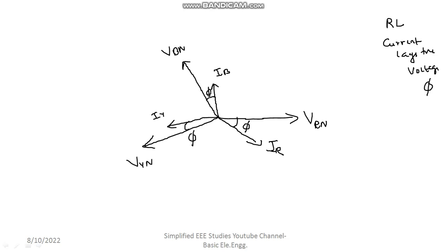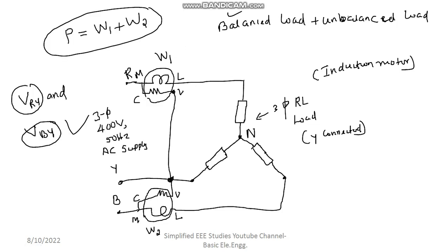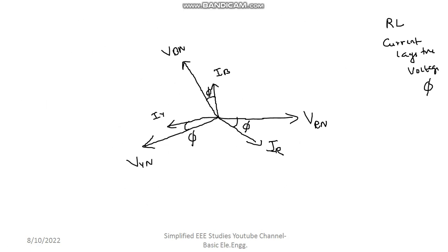Next, consider the circuit diagram. In the circuit diagram, it is very clear that wattmeter has been connected between R and Y, then B and Y. So regarding W1, I require VRY. W2, I need VBY. So how to construct VRY and VBY? VRY and VBY are the line voltages. How to construct? From the phase voltages, I can construct line voltage.